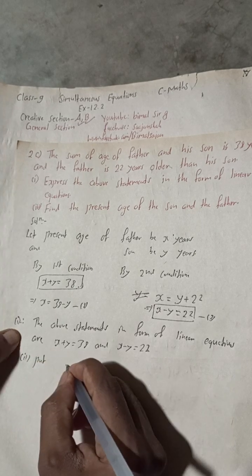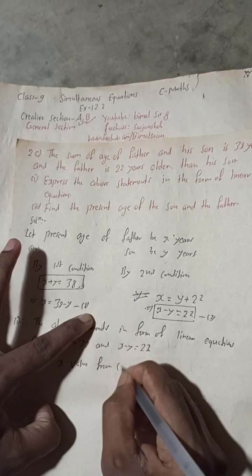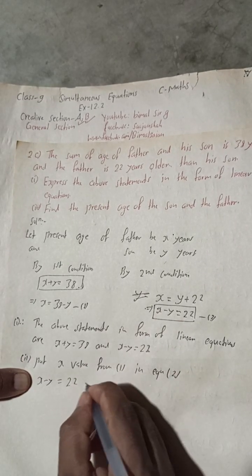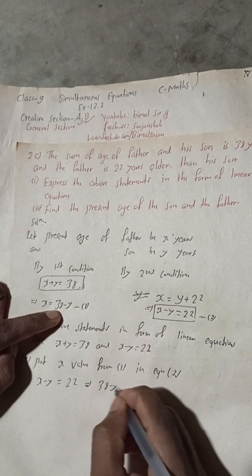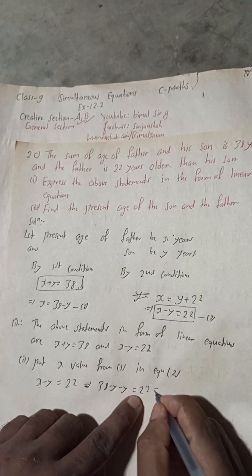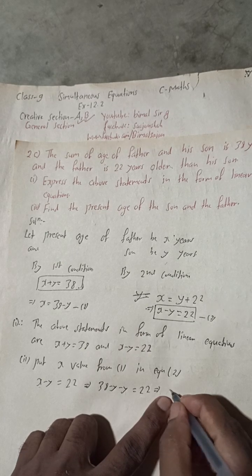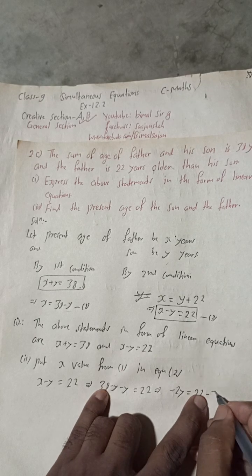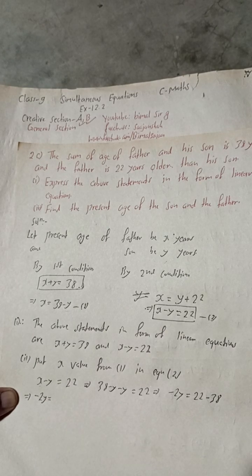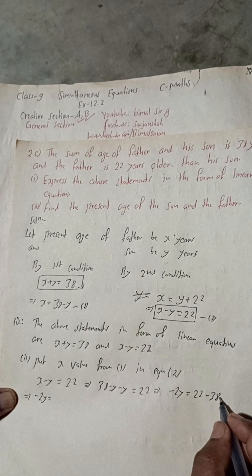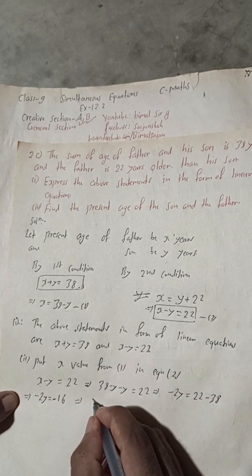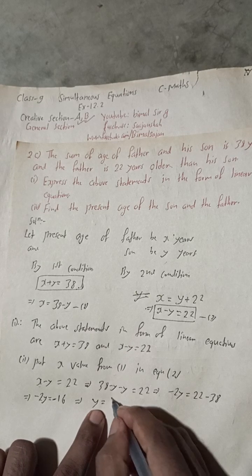Substituting x = 38 minus y into equation 2, x minus y equals 22 becomes: 38 minus y minus y equals 22. This gives us 38 minus 2y equals 22. Rearranging: minus 2y equals 22 minus 38, which is minus 16. So minus 2y equals minus 16.